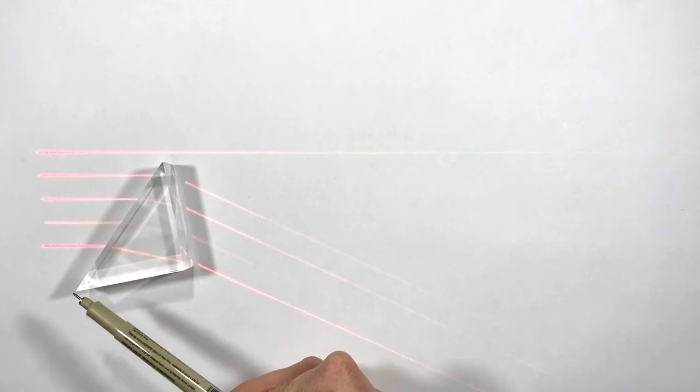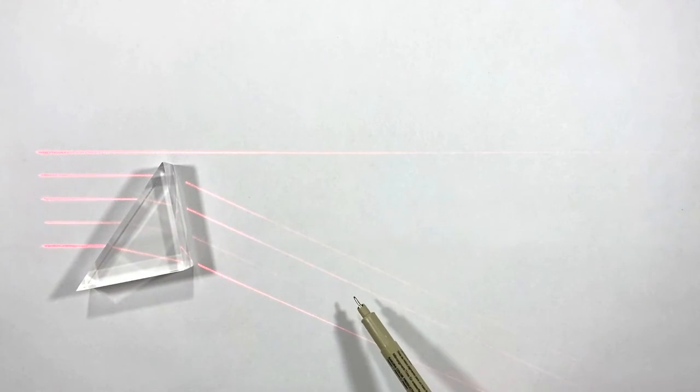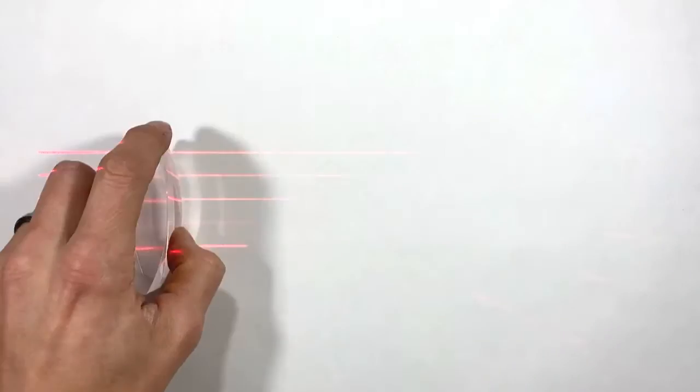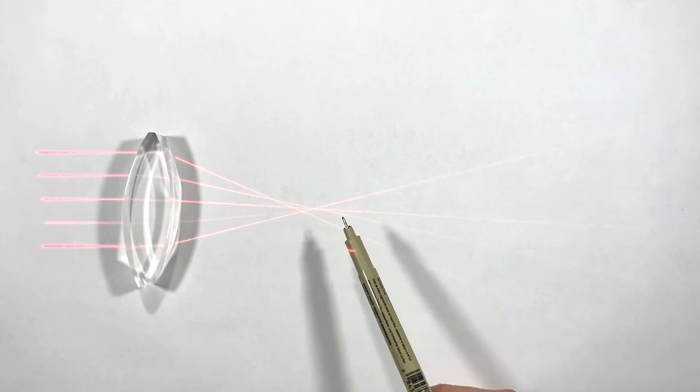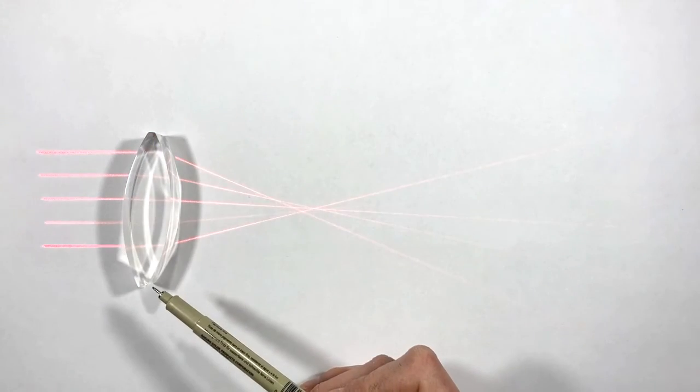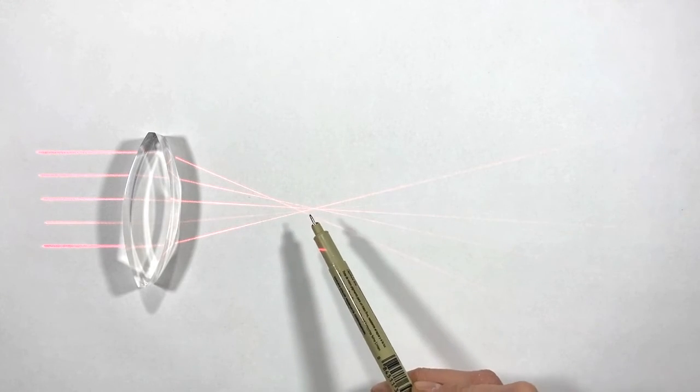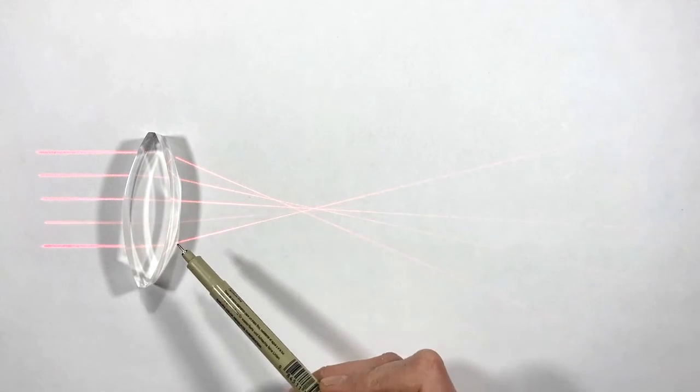So we've seen that when light strikes a prism at an angle, it refracts in a certain direction. And when light strikes a lens, it refracts in the same way. The difference being that a lens is curved. So light is refracted in different directions at different points along the lens.